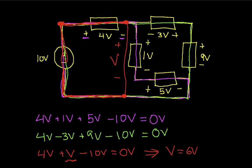What that tells me is that the voltage from this node to this node is 6 volts. And sometimes when you're solving circuits, being able to find the voltages between two nodes in the circuit can be very helpful.